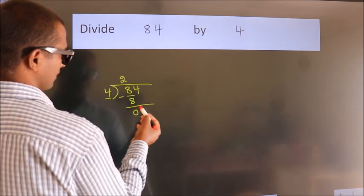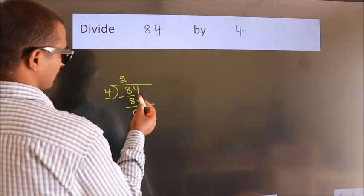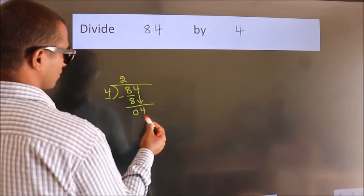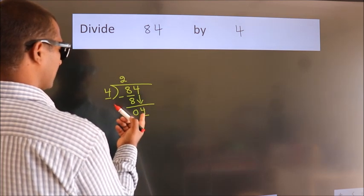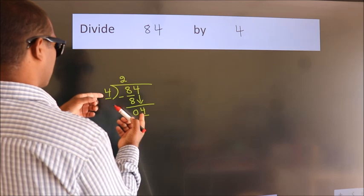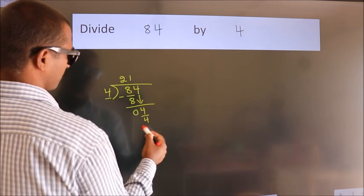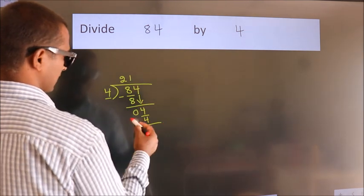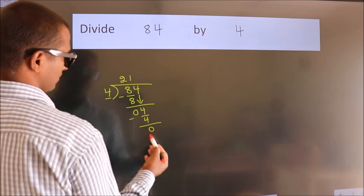After this, bring down the beside number. So 4 down. When do we get 4? In the 4 table. 4 ones are 4. Now we subtract. We get 0.